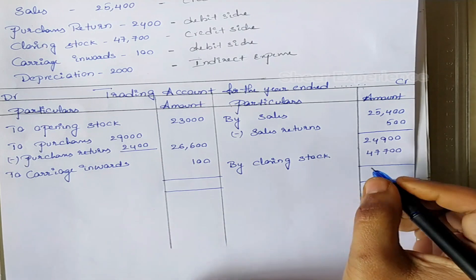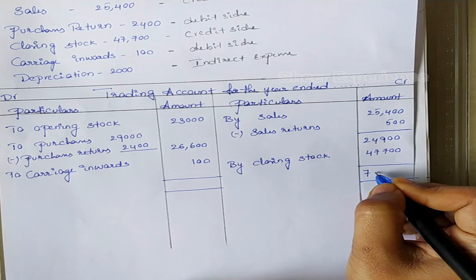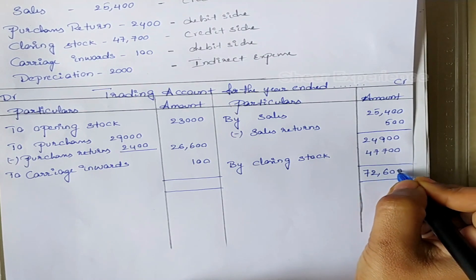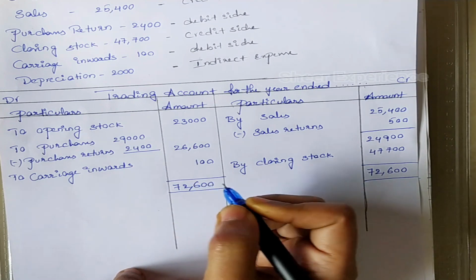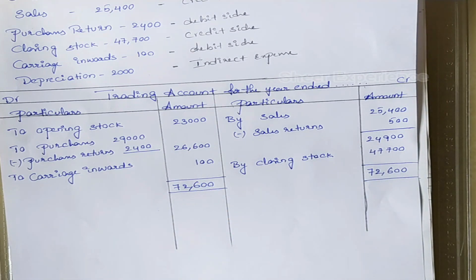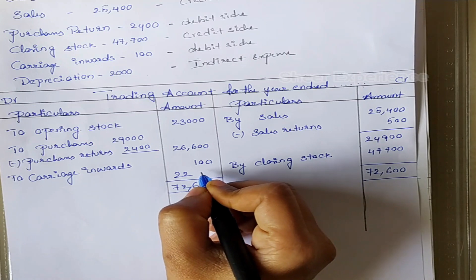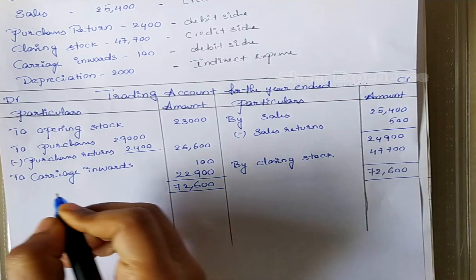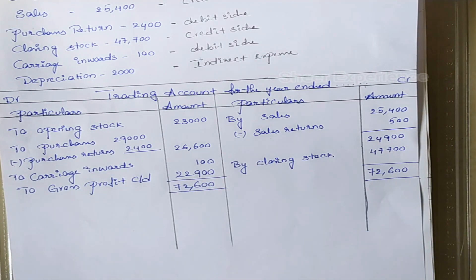Now we will balance the amounts on both sides. We have 72,600 on the credit side, which is the higher amount, so we mention 72,600 on both sides. We will deduct the lesser amount on the debit side from the higher amount on the credit side: 72,600 minus 49,700 comes to 22,900. This amount is gross profit, because the purpose of preparing the trading account is to know the gross profit or gross loss.